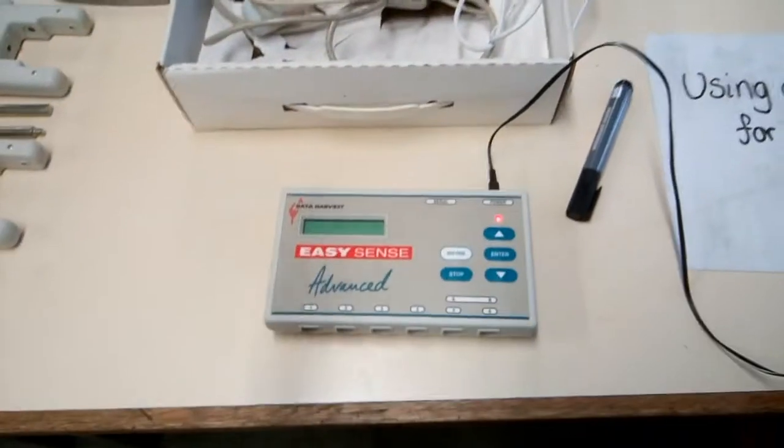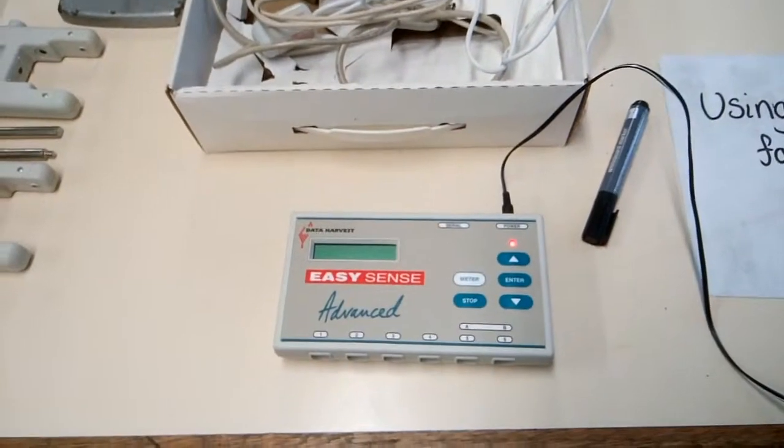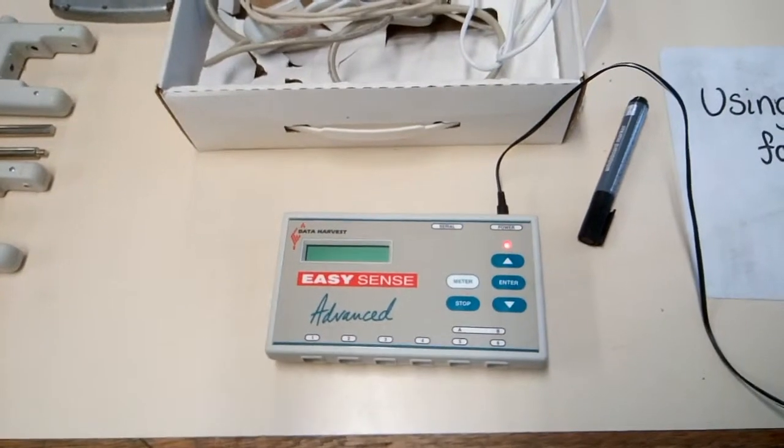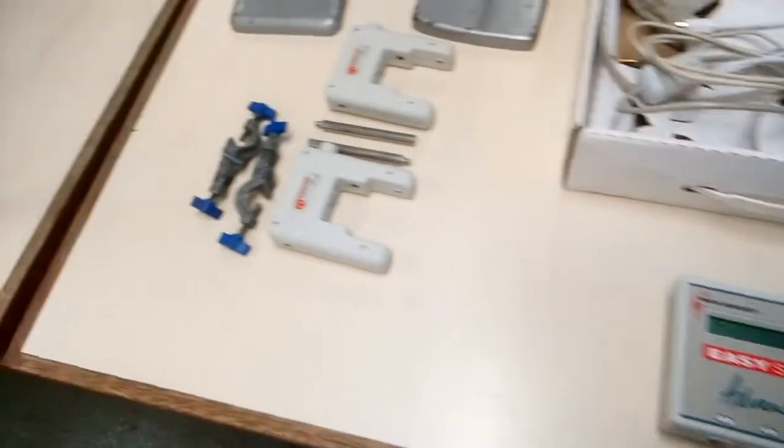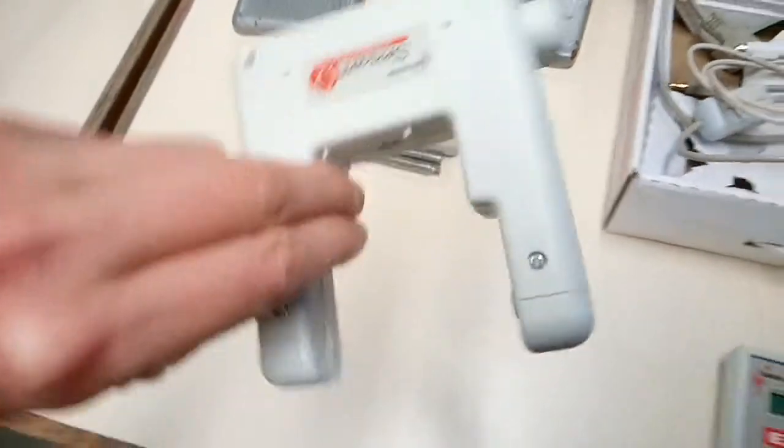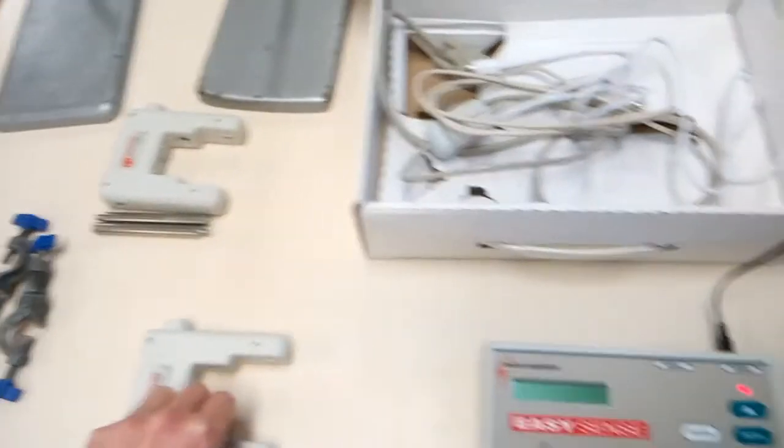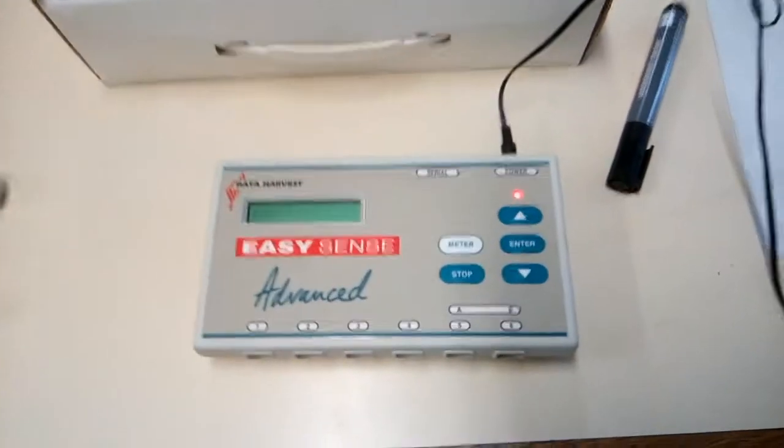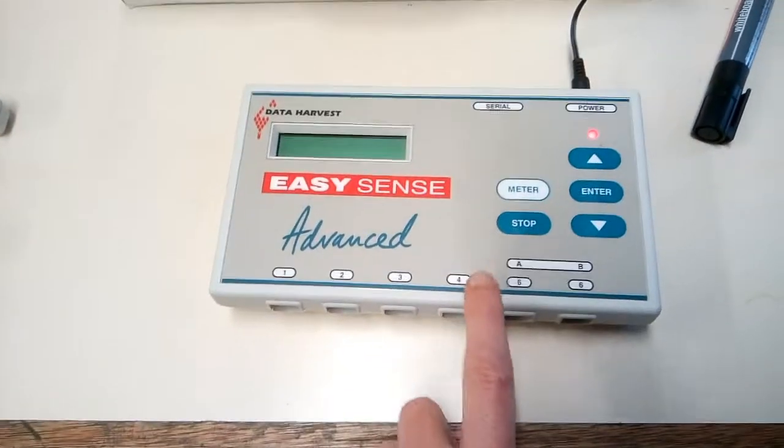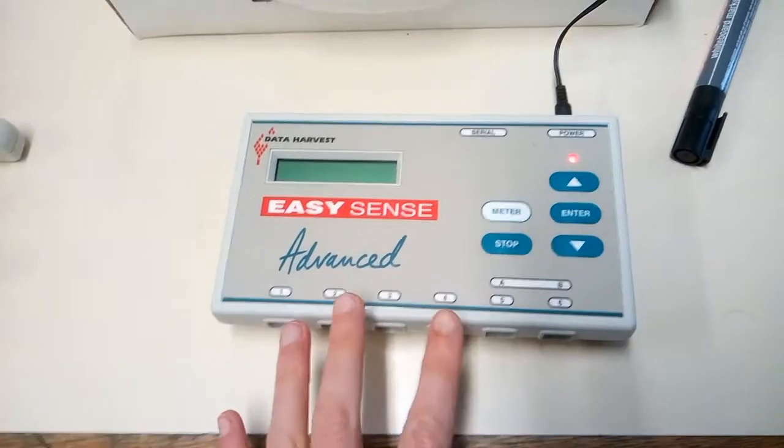Next bit, this won't work unless we attach some sensors to it. We're going to look at two different ways we can measure time. The first thing you're going to need to do is you need to get one of these, which is a light gate, and we're going to be connecting it up to the data logger.